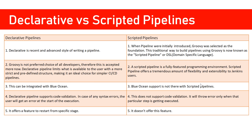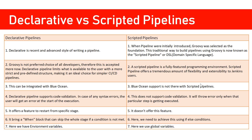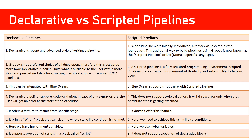For conditional logic, declarative syntax has a directive named `when`, whereas in scripted pipelines you can only rely on if-else conditions. Another difference is that declarative pipelines have environment variables, while scripted pipelines use the concept of global variables. And as already mentioned, you can have script blocks inside declarative pipelines but the reverse is not possible. In this course, we will primarily be focusing on declarative syntaxes.